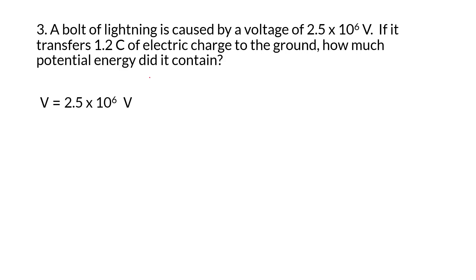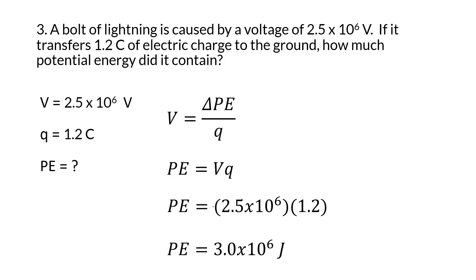Here we have a volt of lightning that has a voltage of 2.5 times 10 to the 6 volts. We have a charge of 1.2 coulombs, and it's asking about how much potential energy it contained. We can rearrange this equation again. Plug in our values and we get 3.0 times 10 to the 6 joules.